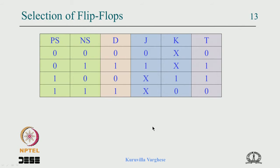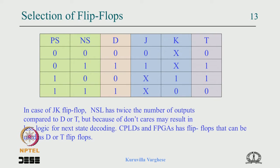The last thing we looked at was the selection of flip-flop — if you use D, T, or JK, what are the transition tables. With JK you have twice the number of outputs from the next state logic, but because of don't-cares the area can be lesser than D and T. FPGAs and CPLDs many times offer a choice between D and T flip-flop; the same flip-flop can be used as D or T. That was the last lecture.